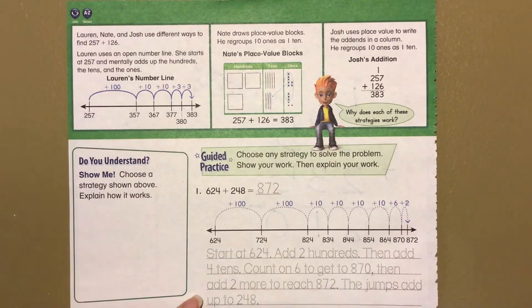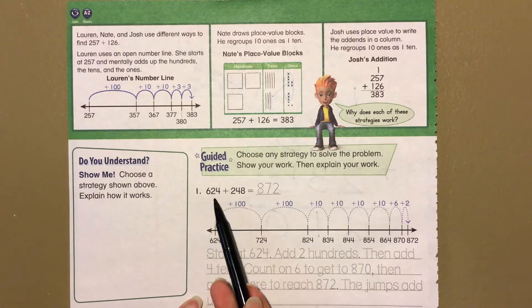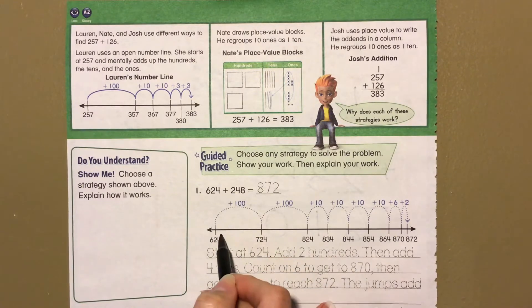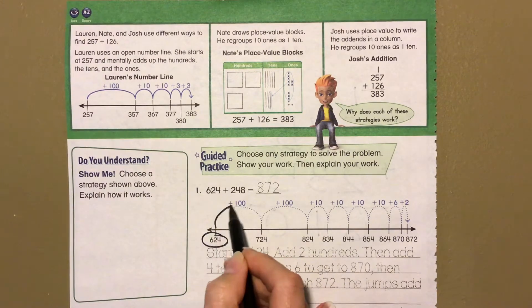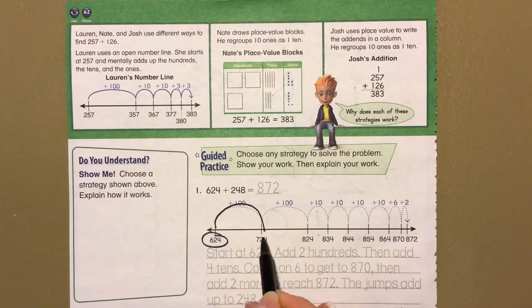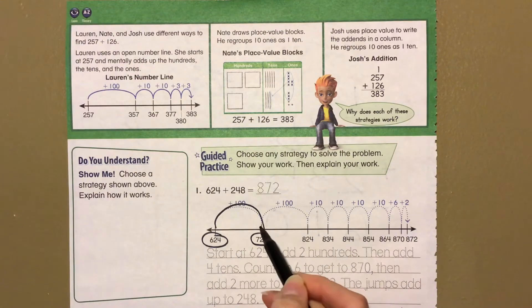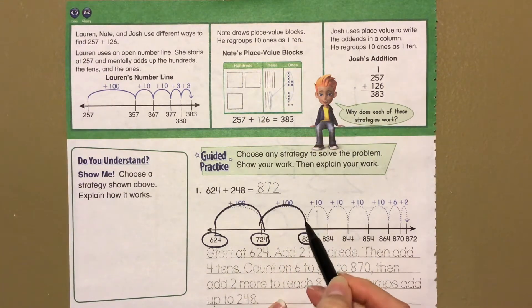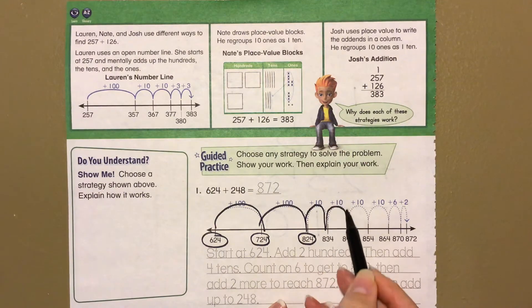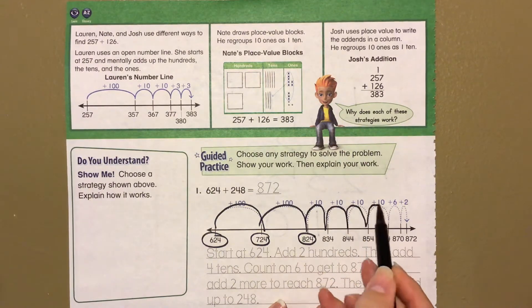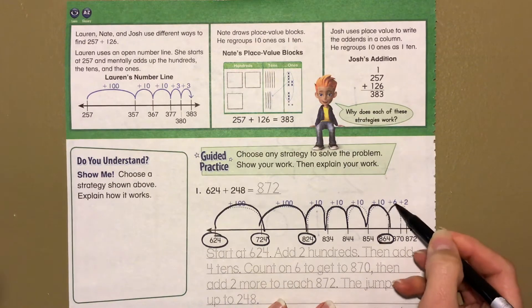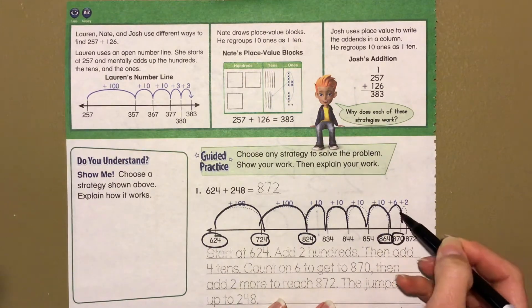Let's look at the first problem: 624 plus 248, using an open number line. Start at 624, add 100 to get 724, add another 100 to get 824, then four hops of 10 to reach 864.